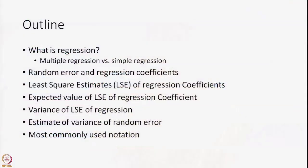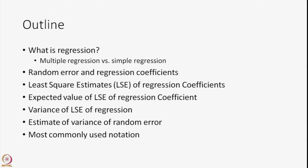The outline for this particular session is: first we will define what regression is. There are two kinds — multiple regression versus simple regression. We will talk about the random error and the regression coefficients, the least squares estimates of regression coefficients, their expected value, their variance, the estimate of variance for random error, and at the end we will give a slide on the most commonly used notation, which will be useful in future for reference.